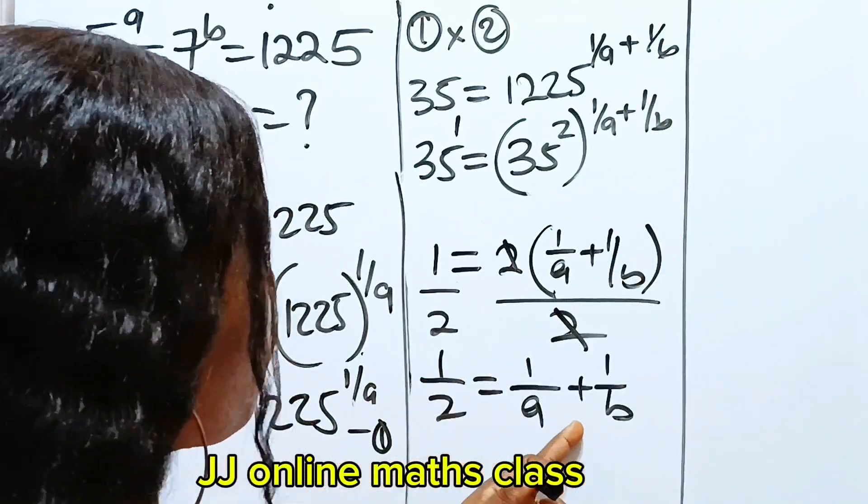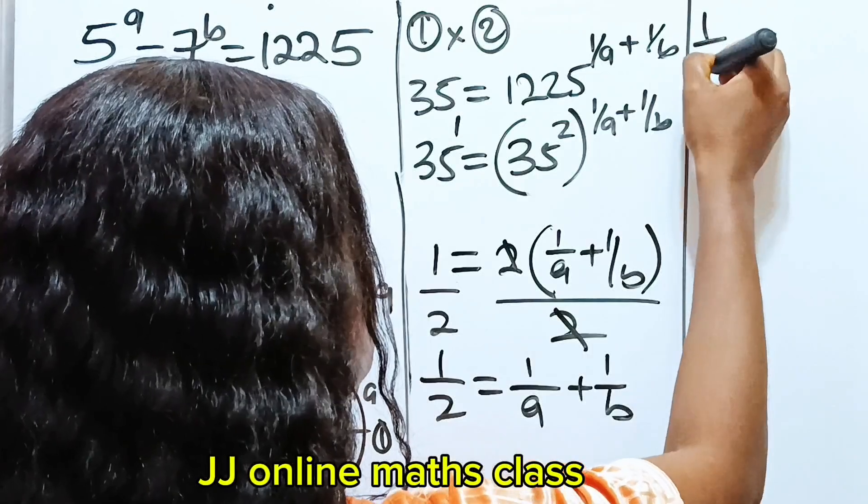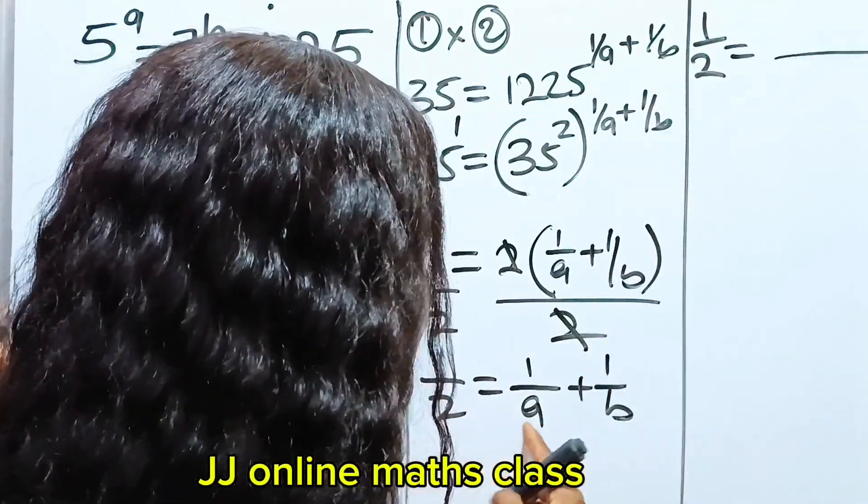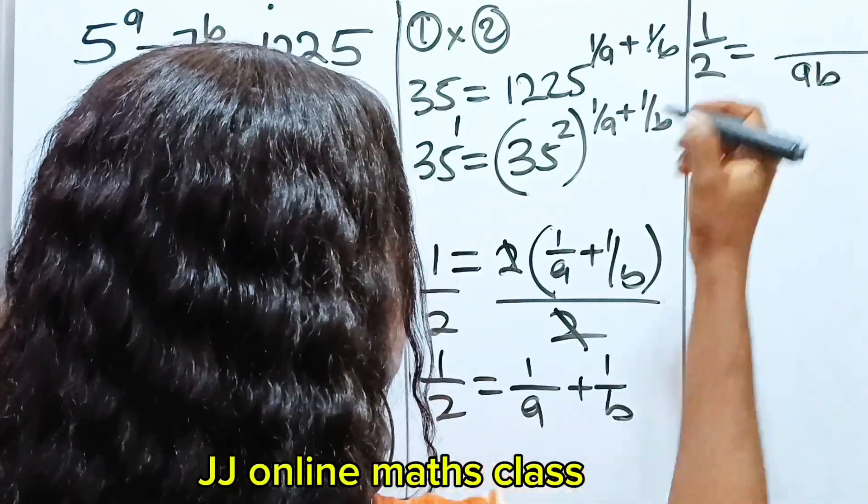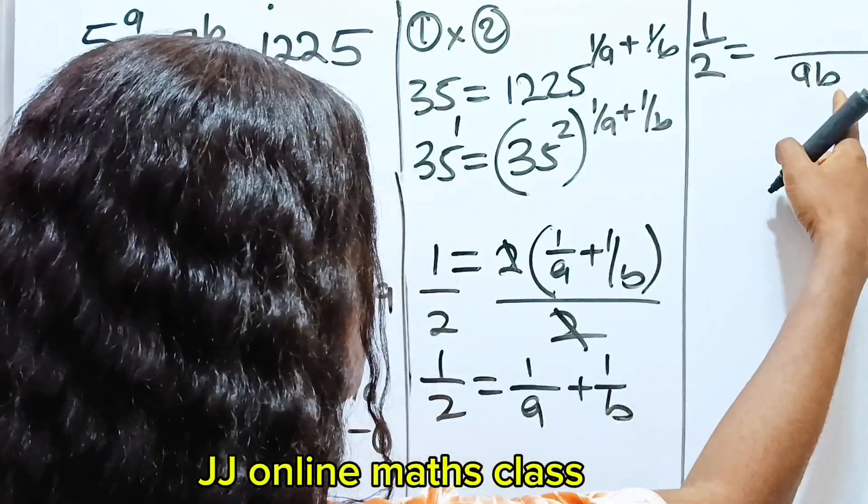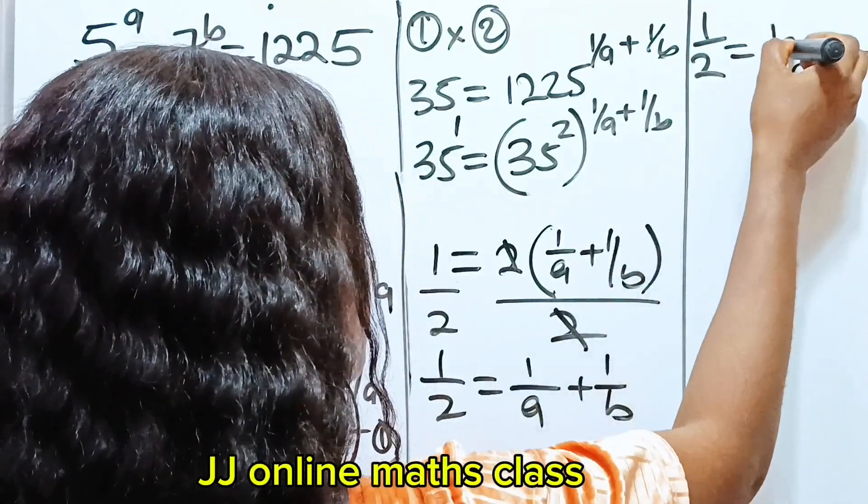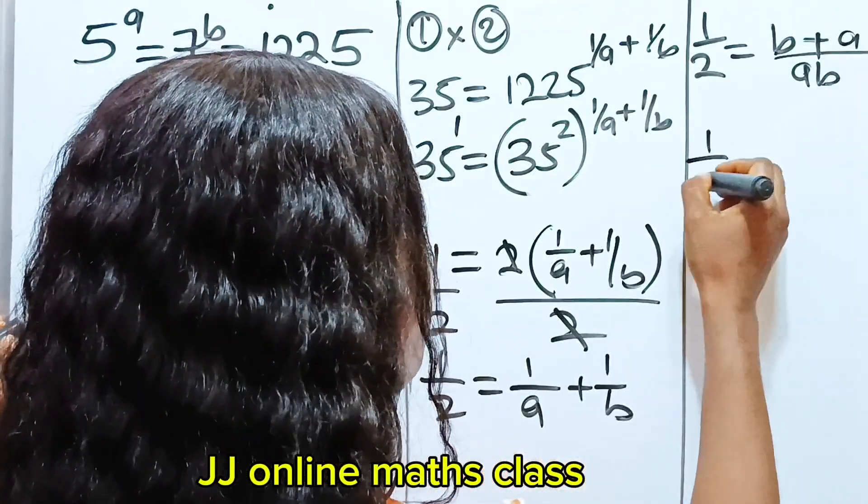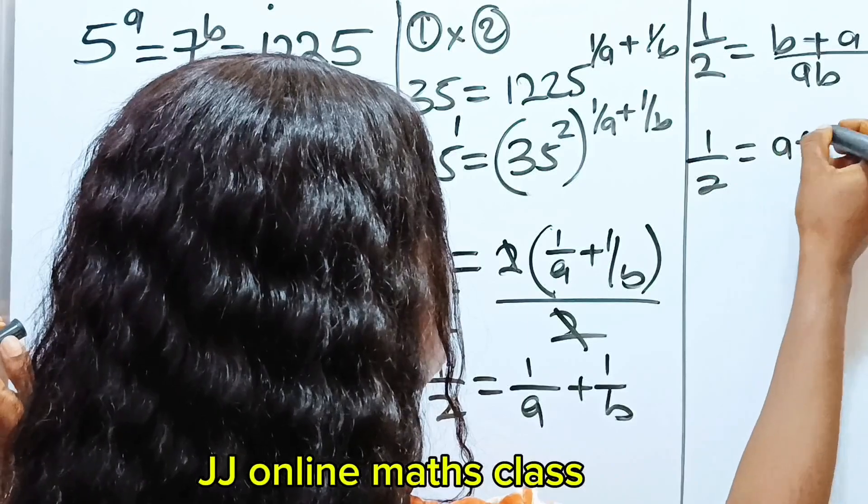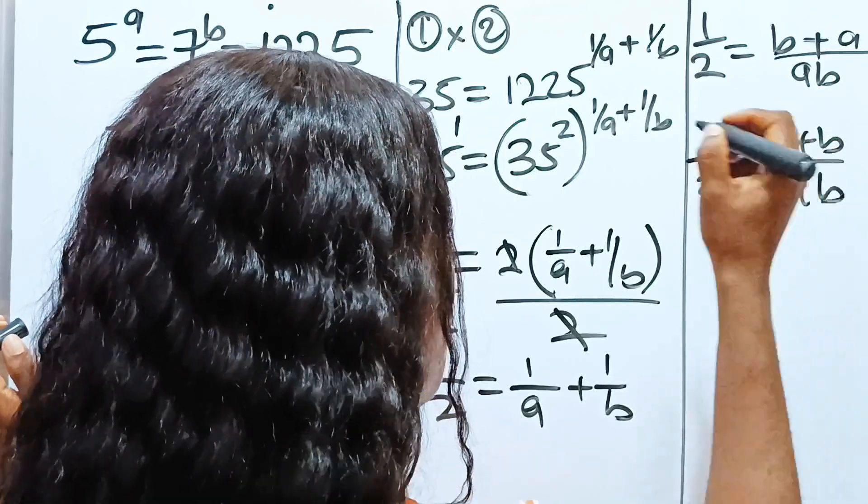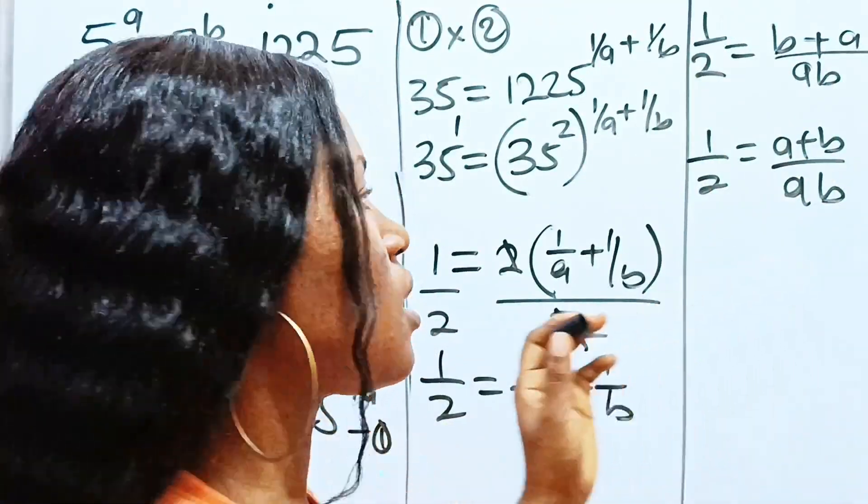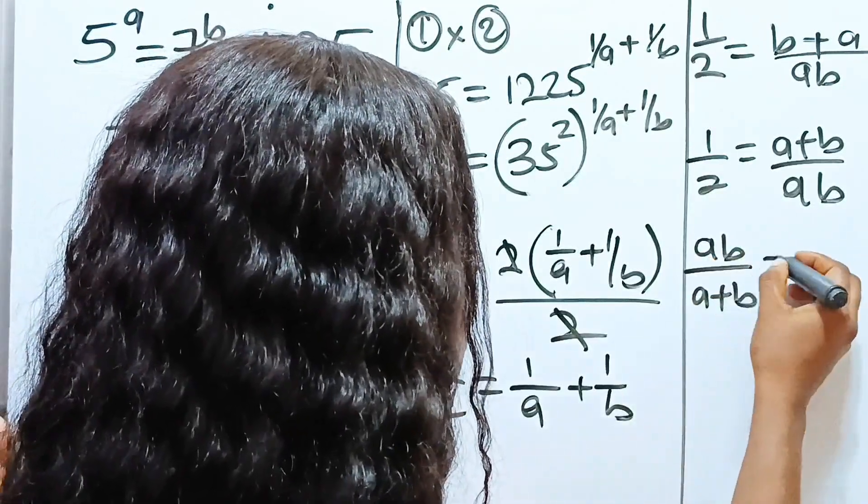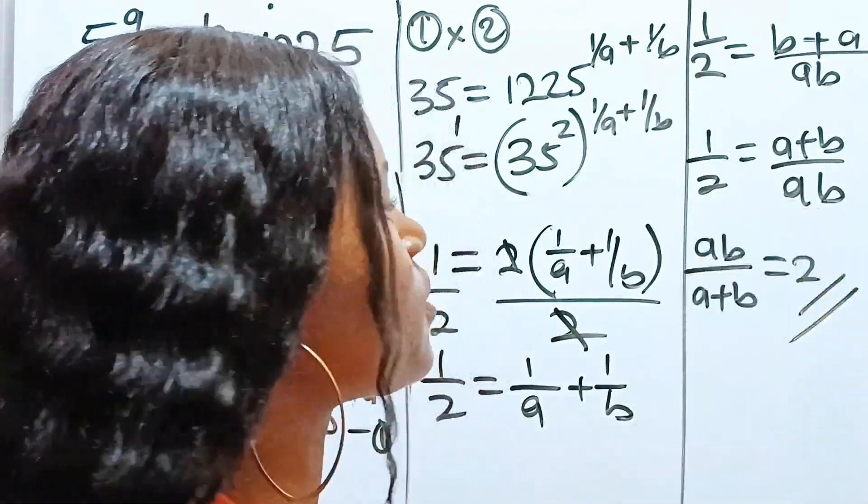All right. Now, let's solve for 1 over a plus 1 over b. So this means that 1 over 2 is equal to, the LCM is AB, right? AB. Now, when A divides AB, you have B. B times 1 is B plus when B divides AB, you have A. A times 1 is A. So you have 1 over 2 is equal to a plus b divided by ab. So if we take the inverse of this, it means that ab over a plus b is equal to 2. And this is what we've been looking for.